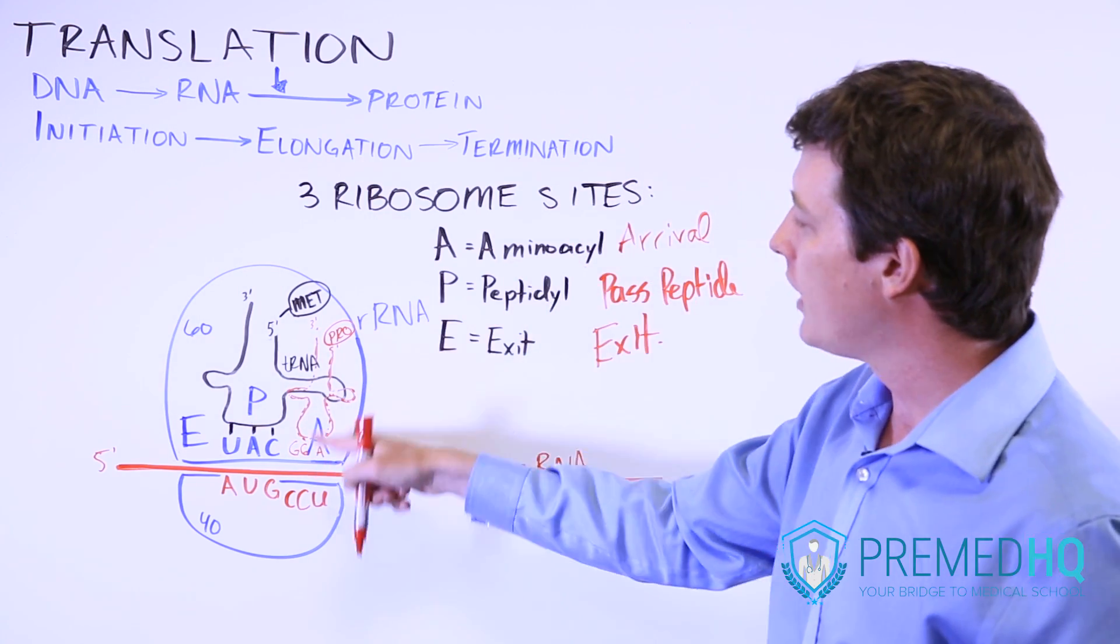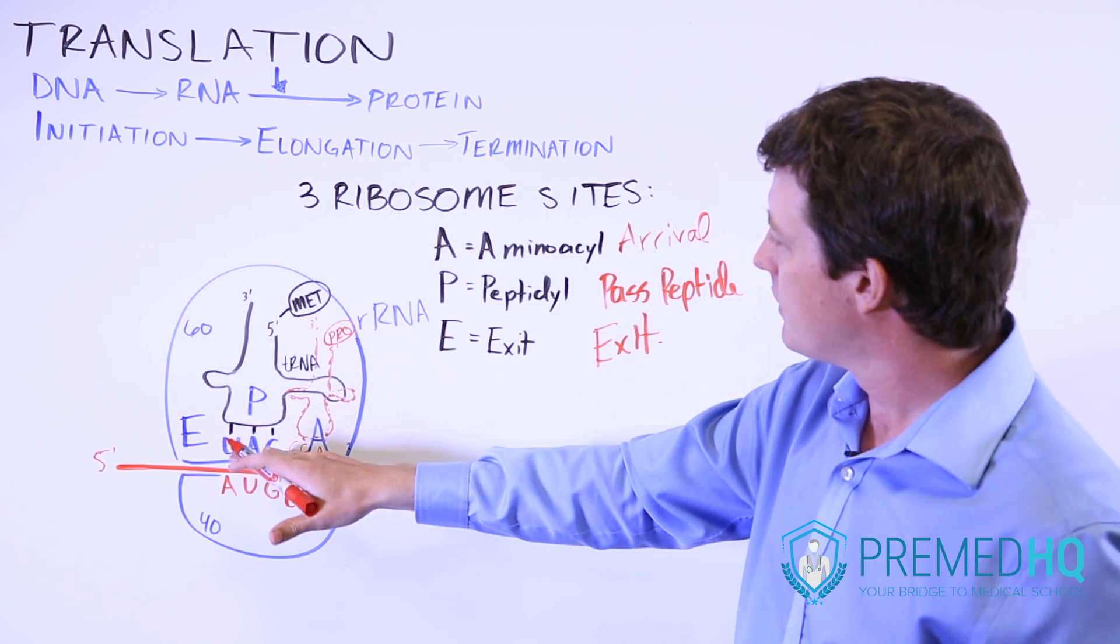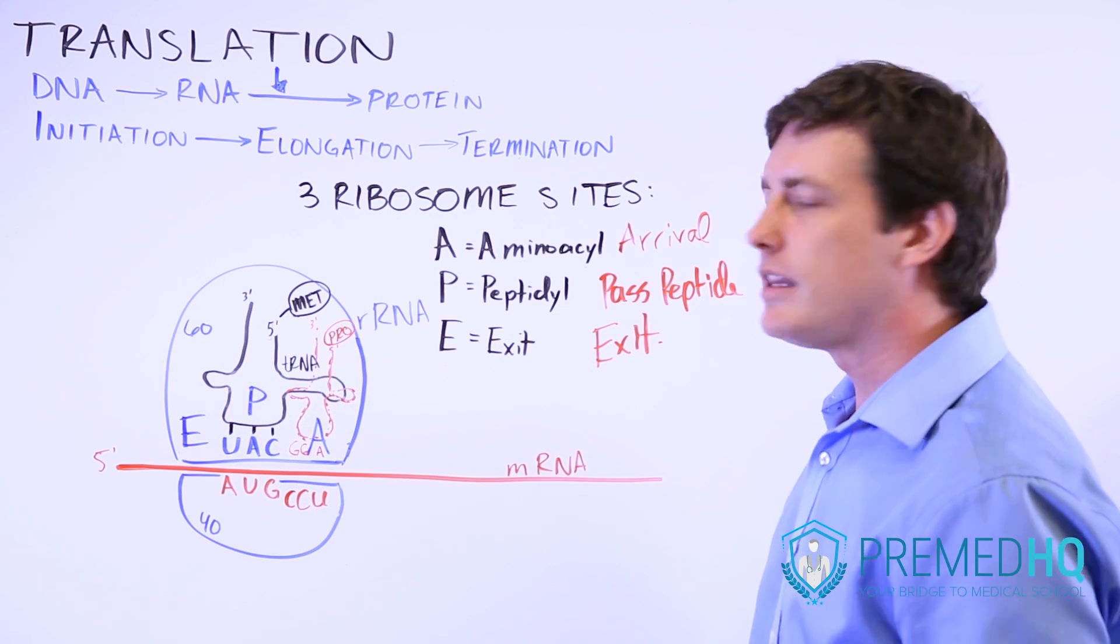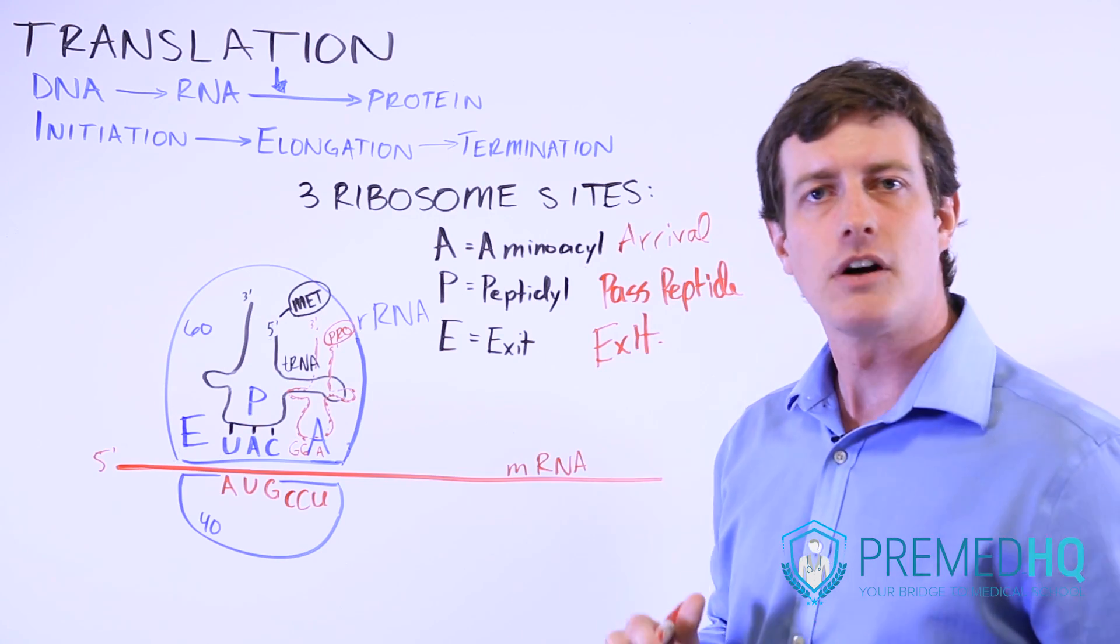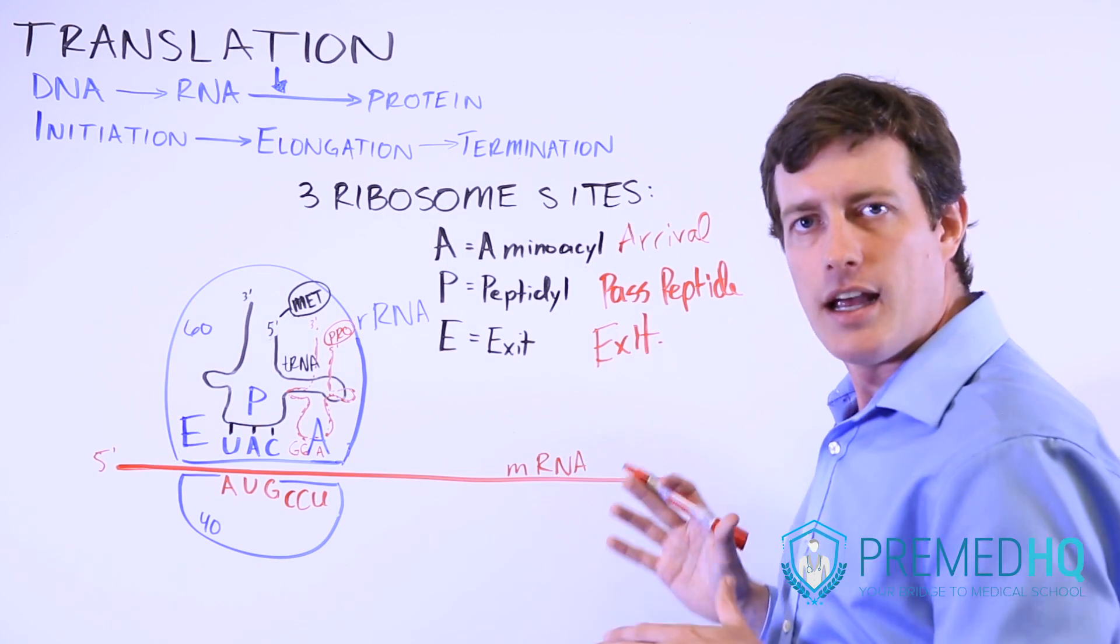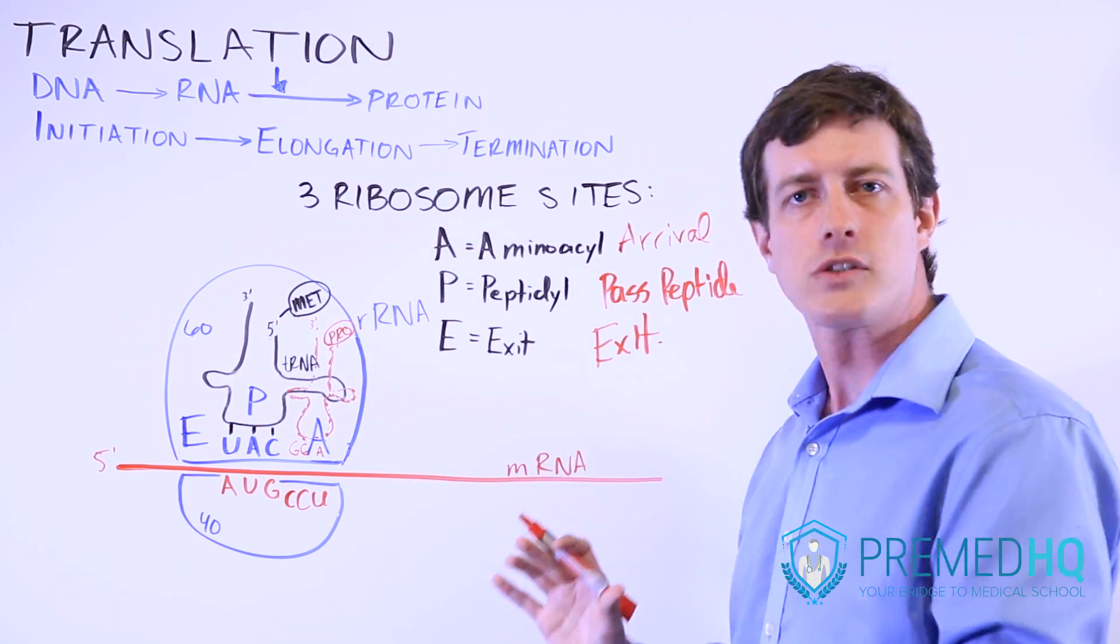And so that arrives in the A site, this thing remains in the P site, and then the elongation process involves passing that peptide and all of these shifting one spot over.